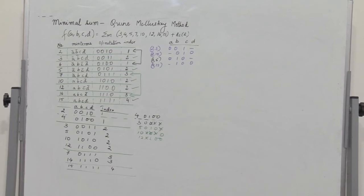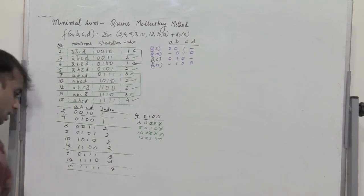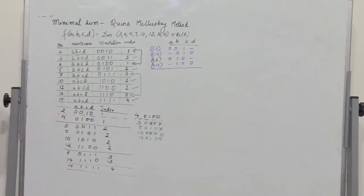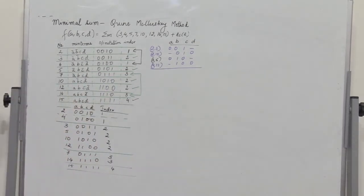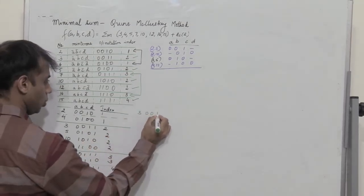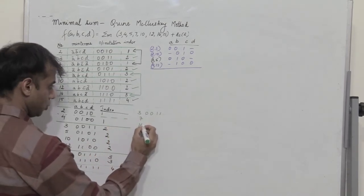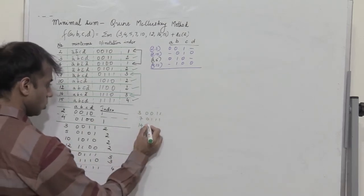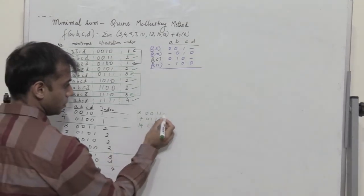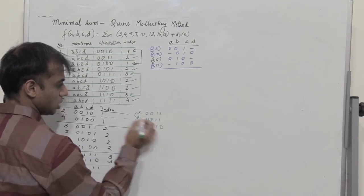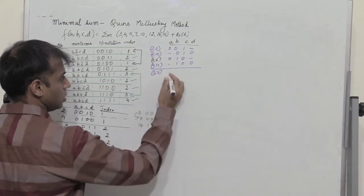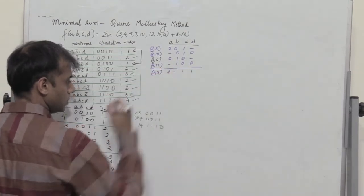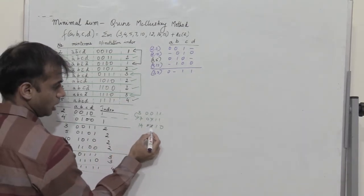This completes the comparison of index 1 and index 2. Next we repeat the same process, comparing all combinations having index 2 with those having index 3. Consider the first one in index 2, which is 3 (0011). I compare this with 7 (0111) and 14 (1110). When I compare 3 and 7, there is a variation in the second bit only, so 3 and 7 is a combination, written as 0-11. Comparing 3 with 14, the first, second and fourth bits vary, so it is not a combination.